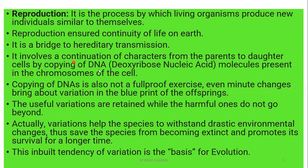It involves the continuation of characters from parents to their daughter cells - their young ones - by copying of the DNA. DNA is deoxyribose nucleic acid, present in the chromosomes of the cell nucleus. DNA is the part that helps in heredity; our characters are stored in our DNA. The copying of DNA does not mean that exact DNA comes into us - no, half DNA from male and half from female comes into us. DNA is the blueprint of the offspring.